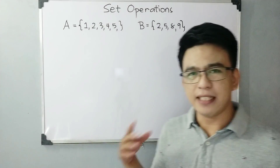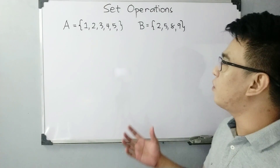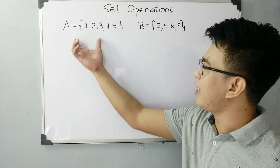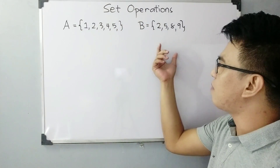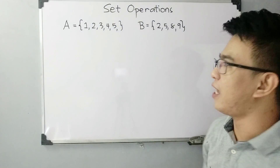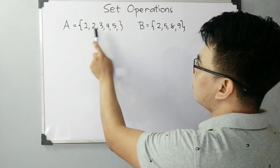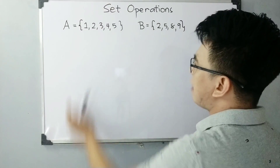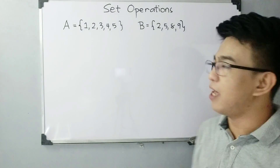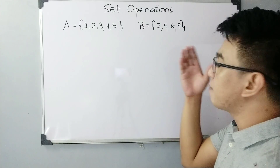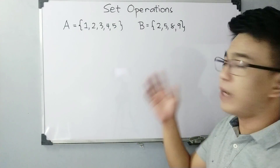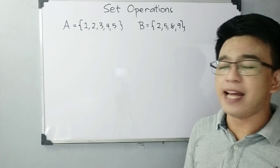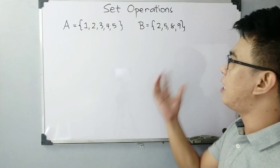So basically guys, to start our video, I will be using two different sets, which is set A and set B. The elements of set A are 1, 2, 3, 4, and 5 — so we have five elements inside set A. And for set B, we have 2, 5, 8, and 9 — so we have four elements.